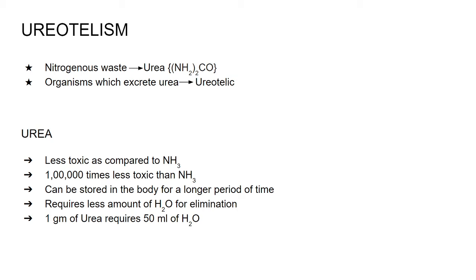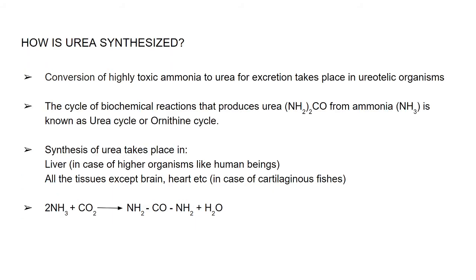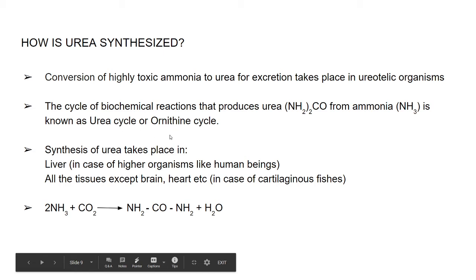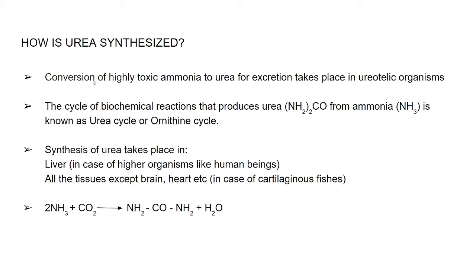Now how is urea synthesized? In higher organisms like human beings, urea synthesis takes place in the liver by a process known as the urea cycle or ornithine cycle. In cartilaginous fish, urea is produced in almost all tissues of the body, except organs like the brain and heart.